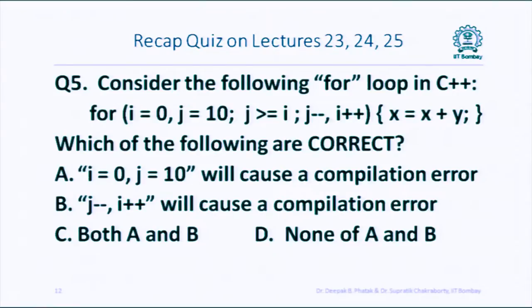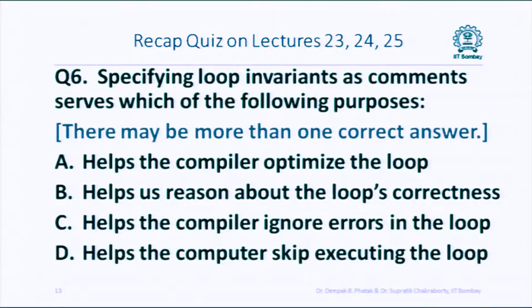Consider this for loop — which of the following are correct? i = 0, j = 10 will cause a compilation error. j--, i++ will cause a compilation error. Both of them will cause a compilation error. The last question: specifying loop invariants as comments serves which of the following purposes? Helps the compiler optimize the loop; helps us reason about the loop's correctness; helps the compiler ignore errors; helps the computer skip executing the loop.